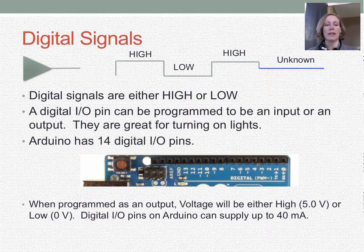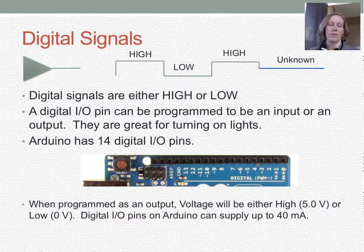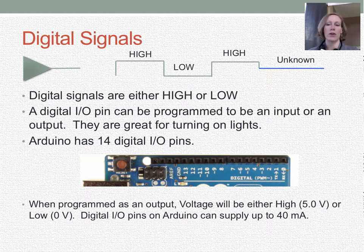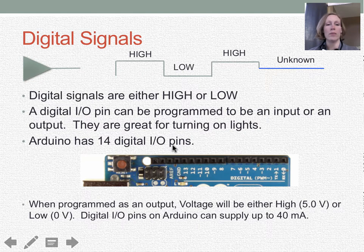When we program a pin as an input, there's a really high resistance within the microcontroller for that pin and there's no current flowing in or out. We're going to use that concept to make sure that no current flows backwards through the LED, destroying it. The Arduino has 14 digital I/O pins, numbered from 0 all the way to 13.